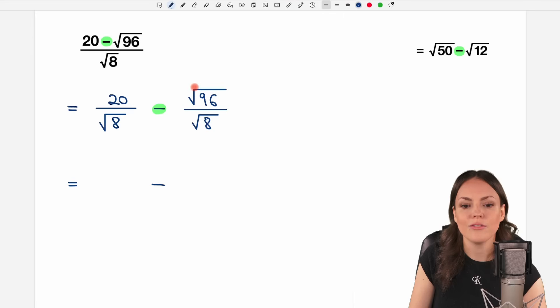because instead of the two separate square roots, we can write this as one big square root, and then write the fraction inside. So we have the 96 over 8 in our square root, and can calculate this then.